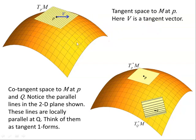Now to picture this. Here we have our manifold M. We have the tangent space to M at p, at point p. At different points on this manifold, there'll be a different vector space, a different tangent space. Here V is a tangent vector.